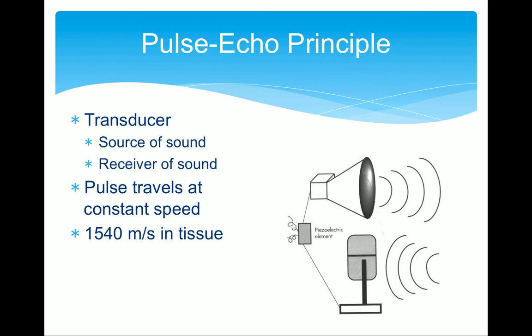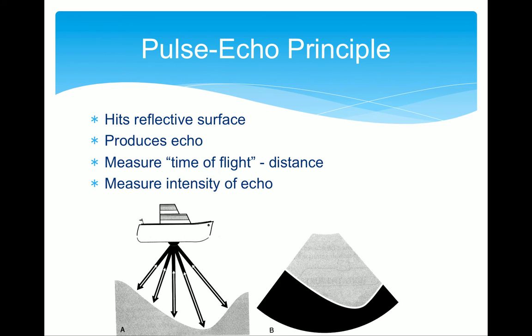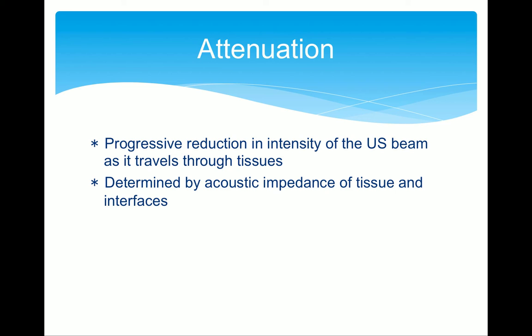An ultrasound transducer is both the source of the sound and the listening device. It makes a pulse sound wave and then it listens for the echo. It does this using something called the piezoelectric effect. There are little crystals in the transducer which, when subjected to an electric current, vibrate and generate the ultrasound wave. Then when the echo returns they deform, and that produces a current which can be measured. So when the wave hits a reflective surface the ultrasound machine will detect the intensity of the echo and the time it took for the echo to return, gaining information about the medium the wave is traveling through and also the distance.